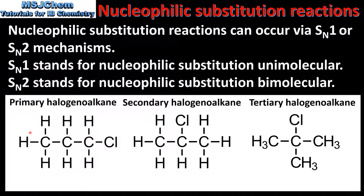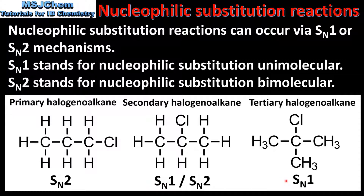Here we can see three examples of halogenoalkanes. From left to right we have a primary halogenoalkane, a secondary halogenoalkane, and a tertiary halogenoalkane. Primary halogenoalkanes react via the SN2 mechanism. Secondary halogenoalkanes react by either the SN1 or SN2 mechanism. Tertiary halogenoalkanes react by the SN1 mechanism. The reasons for this will be discussed in a later video.